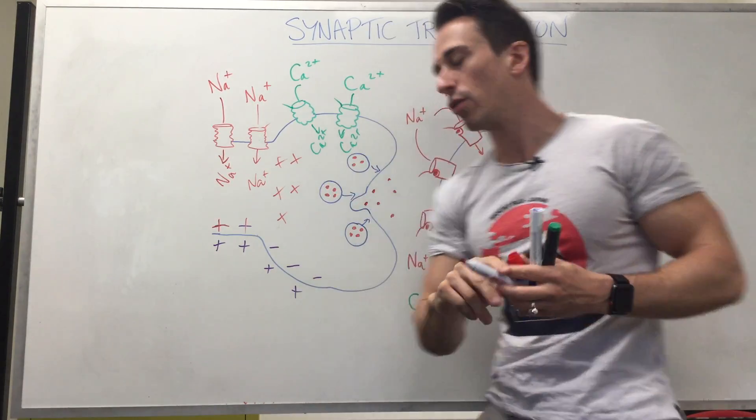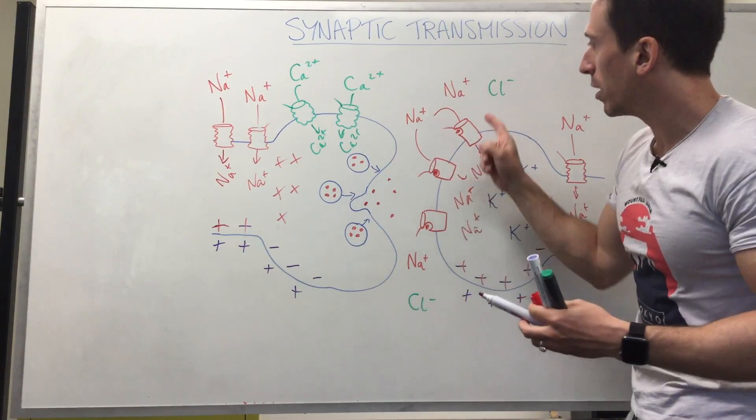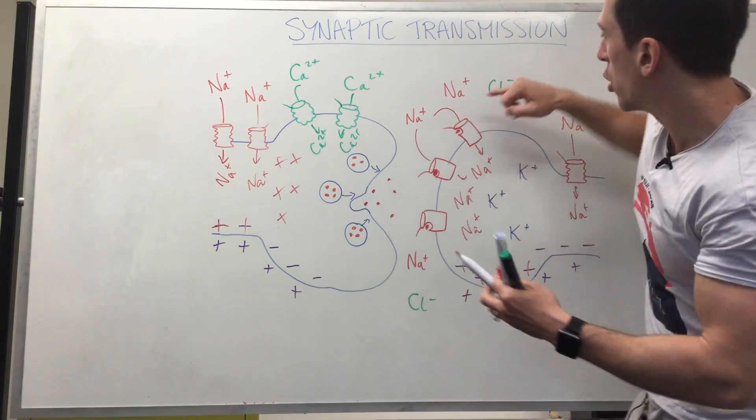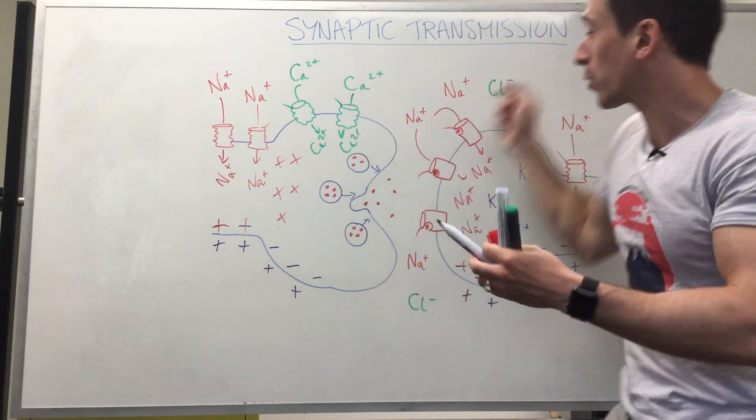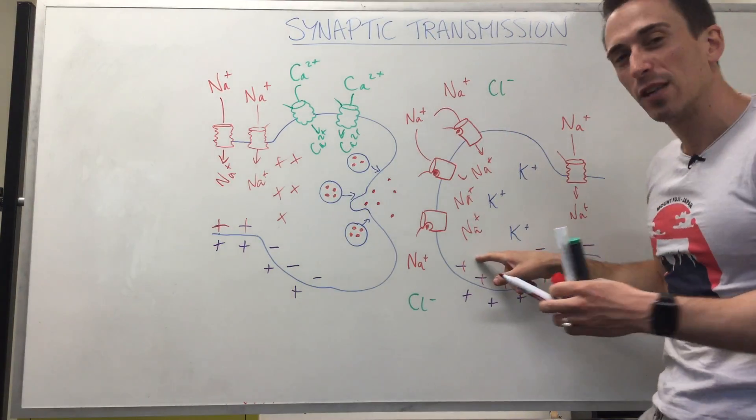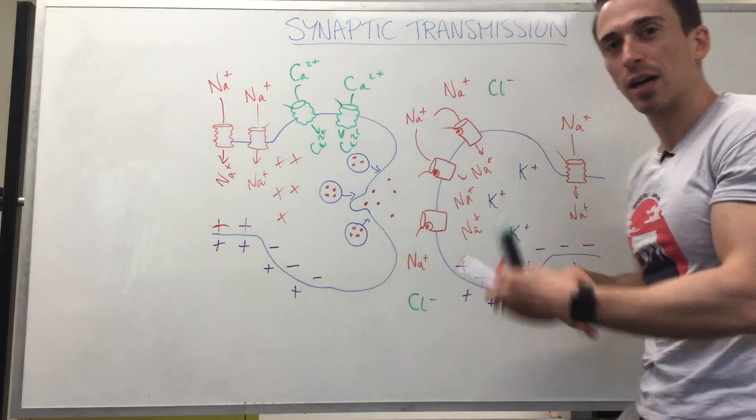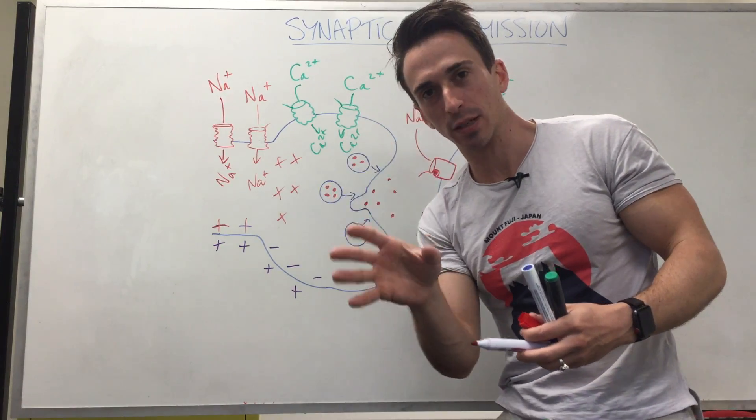If you have an inhibitory neurotransmitter, it's not going to open sodium channels. It may open up chloride channels and negative chloride goes in. If negative chloride goes in, it makes it not positive, but even more negative inside and stops an electrical signal from being sent.